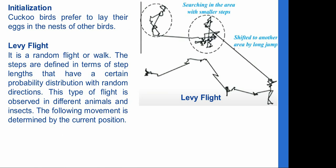Levy flight is the search mechanism used. Within a limited area, the cuckoo takes small steps to search the space, but if the target is not found there, it makes a long jump to another area. It is a random flight or walk where step lengths follow a certain probability distribution with random directions. This type of flight is observed in different animals and insects.